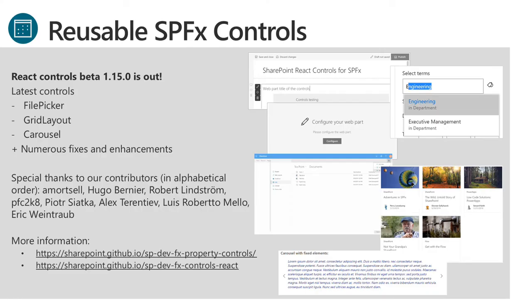Updates on the reusable controls — React controls beta 1.15 is out. Latest controls include file picker, grid layout, and carousel, plus numerous fixes and enhancements. Special thanks to our contributors: Amortzel, Hugo, Robert, PFC2K8, Peter, Alex, Lewis, and Eric. A reminder: please update your GitHub profiles to use your name and maybe reference your Twitter account, so we can properly acknowledge the great work people are doing.